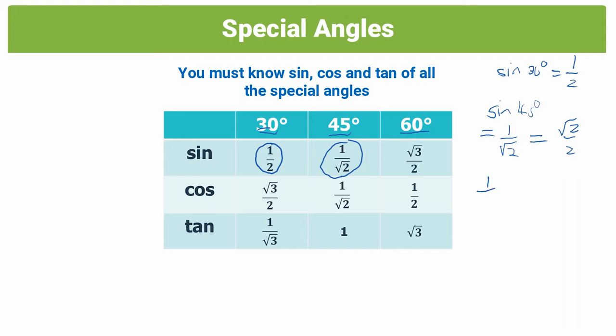Because if you take 1 over root 2 and multiply it by 1, root 2 over root 2, because root 2 over root 2 is in fact 1, to rationalize that denominator, you'd get an answer of root 2 over 2. And this is the value you'd get from your calculator. So if you put sine 45 degrees in your calculator, your calculator would give you the answer of root 2 over 2.